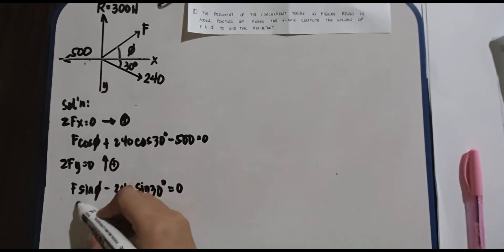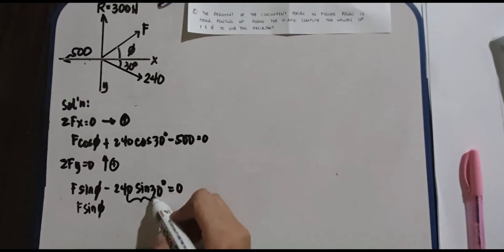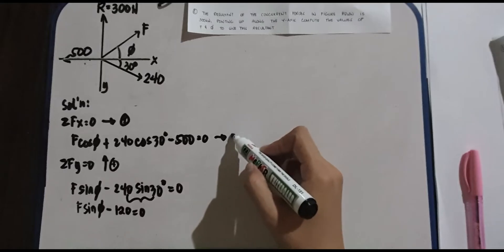So we have F sine phi, this is 120, so negative 120 equals 0. This is your equation 1.